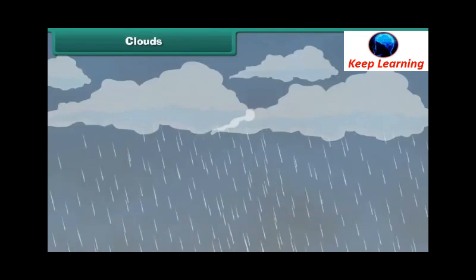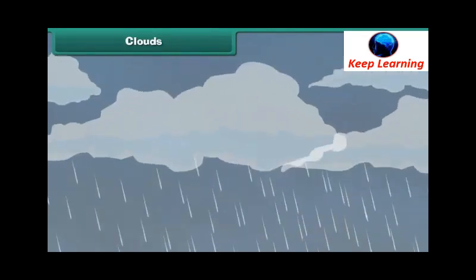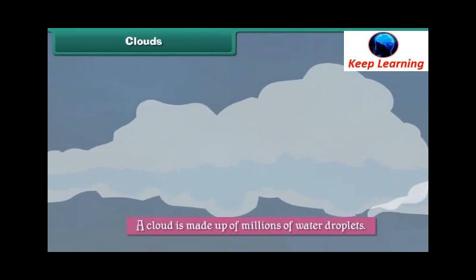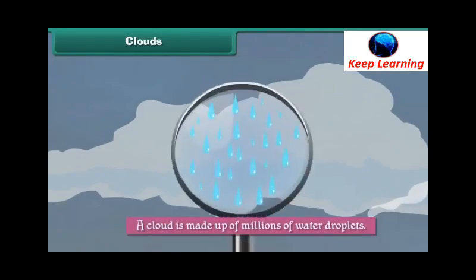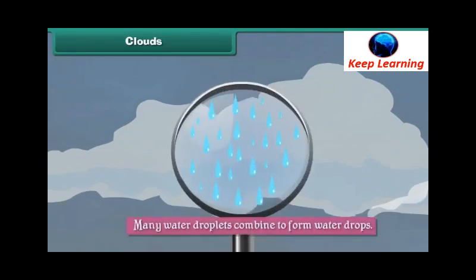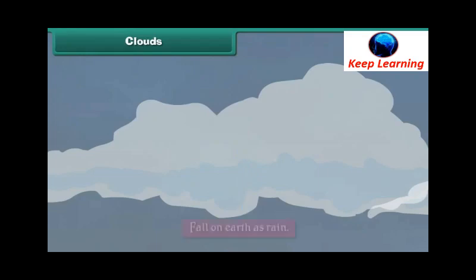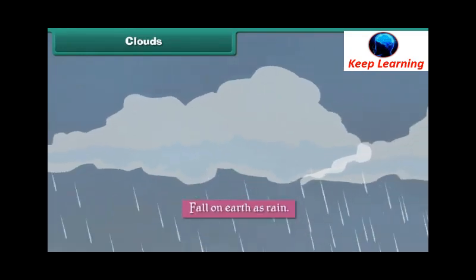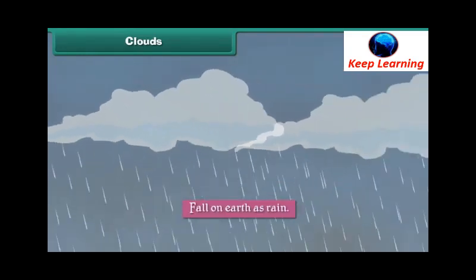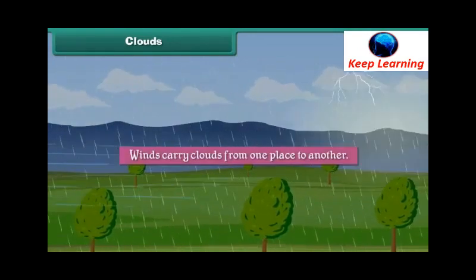Clouds bring rains. A cloud is made up of millions of water droplets. Many water droplets combine to form water drops. As the drops grow in size, they become heavy and fall on earth as rain. Winds carry clouds from one place to another.